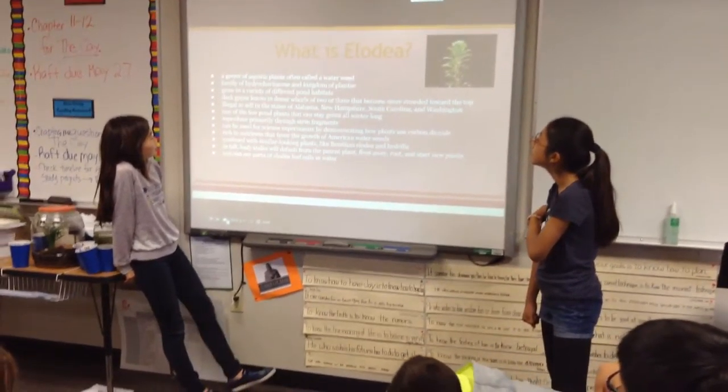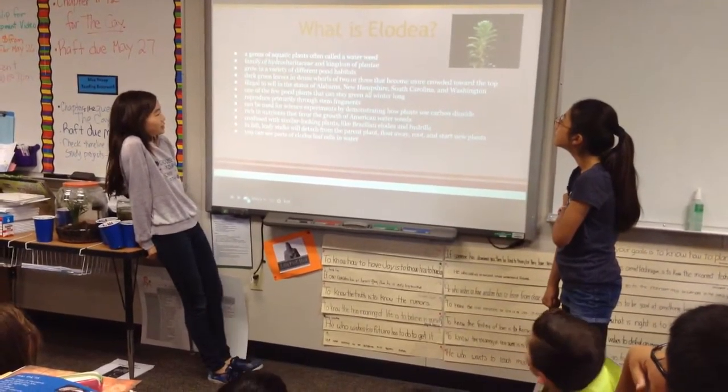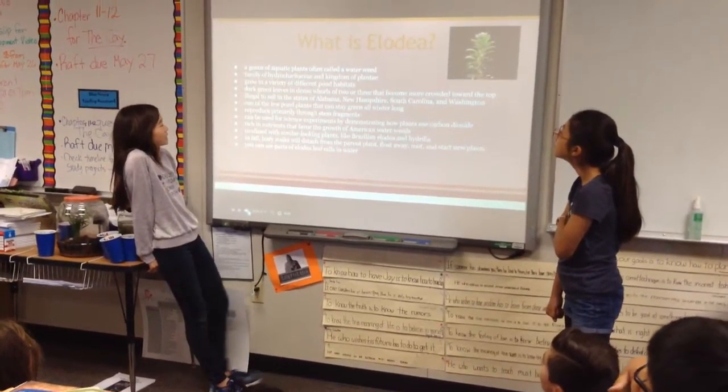It is grown in a variety of different pond habitats. It has dark green leaves in dense whorls of two or three that become more crowded toward the top.